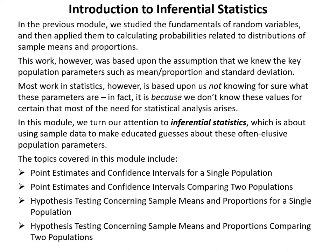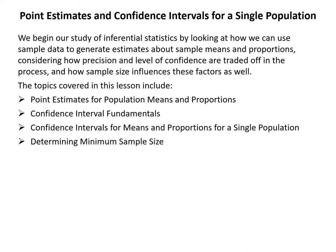The topics covered in this module include point estimates and confidence intervals for a single population, point estimates and confidence intervals comparing two populations, hypothesis testing concerning sample means and proportions for a single population, and hypothesis testing comparing two populations. Within this lesson we begin with point estimates for population means and proportions, confidence interval fundamentals, confidence intervals for means and proportions for a single population, and determining minimum sample size.